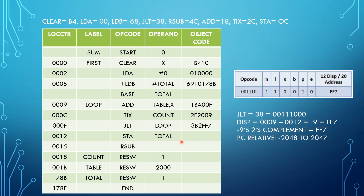Next we have JLT loop. It is a Type 3 instruction format. The JLT mnemonic value is 38, with most significant bits taken for the opcode. N and I are set to 1 (not immediate or indirect), and X is 0 (no comma). The displacement: LOOP is 0009 and the program counter is 0012, giving -9. Taking the 2's complement of 9 gives FF7. FF7 lies between -2048 and 2047, so the program counter bit P is set to 1. E is 0 for Type 3. The object code is 3B2FF7.